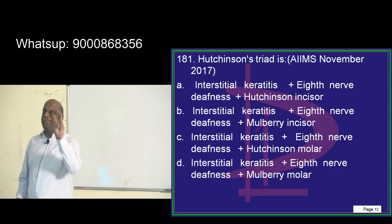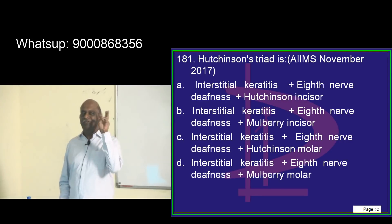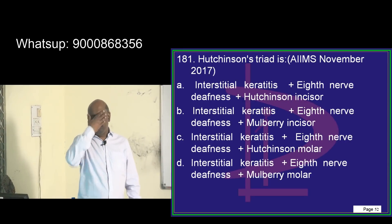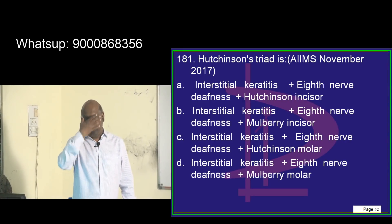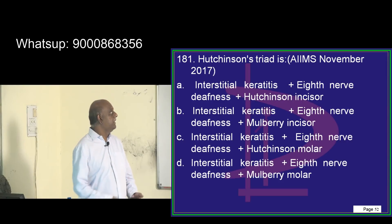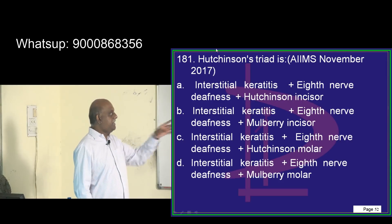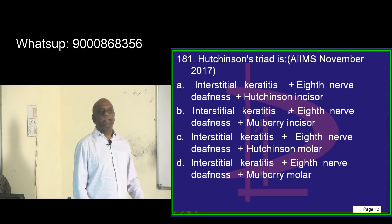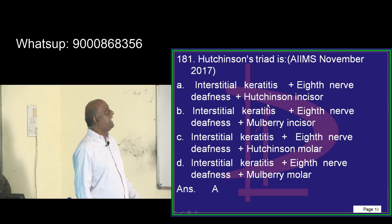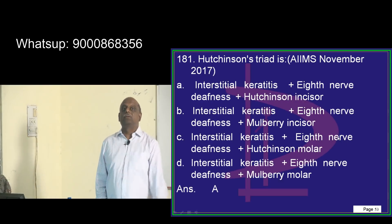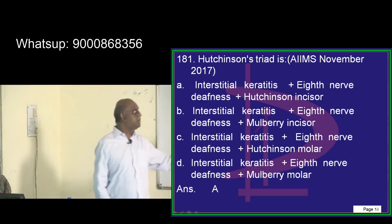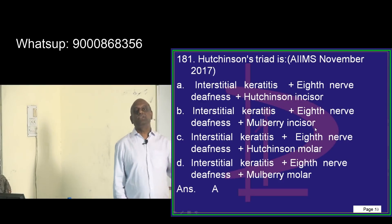The three monkeys of Mahatma Gandhi — don't speak bad, don't see bad, don't hear bad. So: don't see — interstitial keratitis; don't hear — eighth nerve deafness; and don't close the mouth — means Hutchinson's incisors. This is Hutchinson's triad, which you have to basically remember.